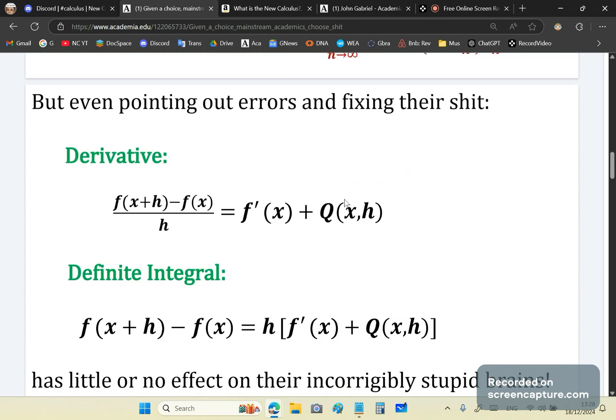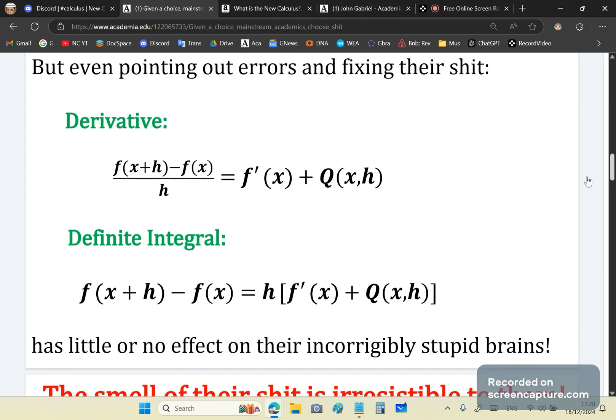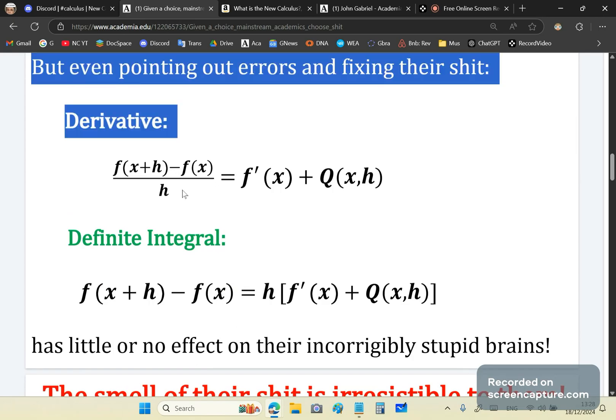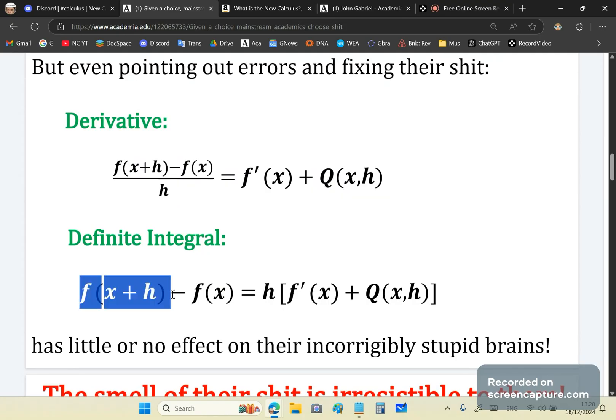But even pointing out errors and fixing their flawed formulation doesn't seem to help. So I actually fixed their flawed formulation with my historic geometric theorem, which comes from an inspiration of the new calculus. Because in the new calculus, this is q of x(m,n), which is always zero. But in the mainstream calculus, this term is never zero unless f is a linear function.